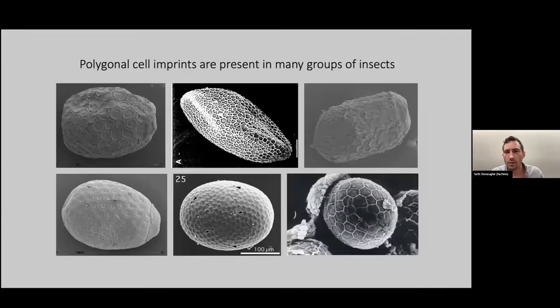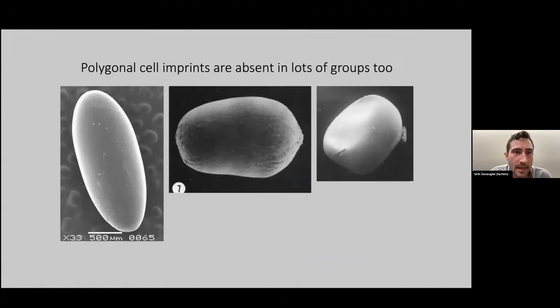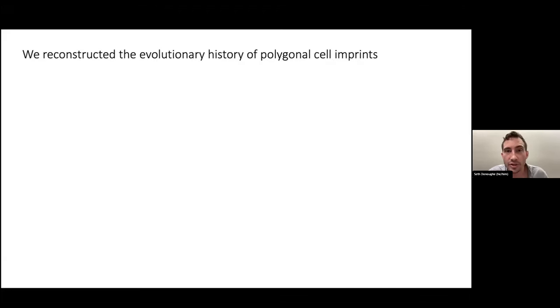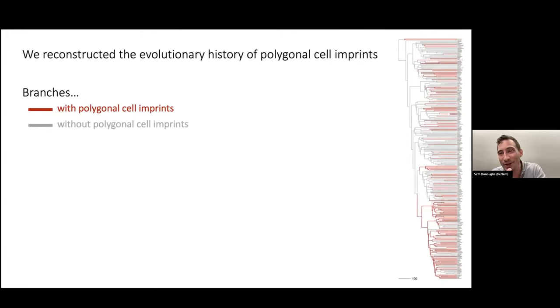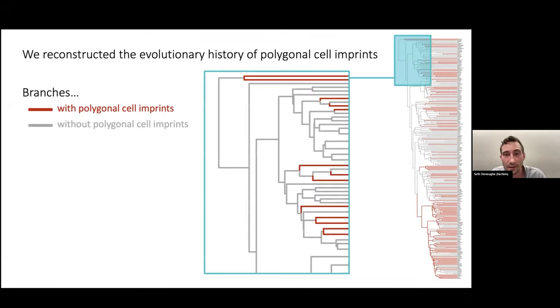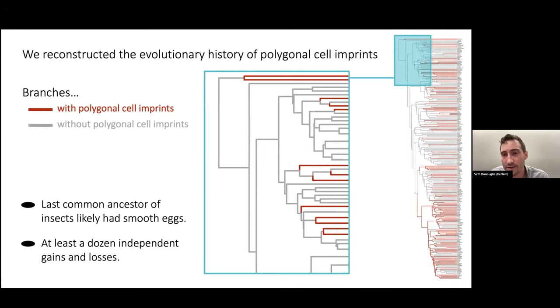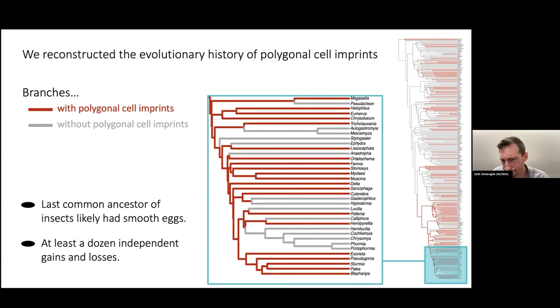With this dataset, what can we learn? One thing we can learn is that these polygonal cell imprints are present in lots of groups of insects and absent in some of them too. The first thing we did is reconstruct the evolutionary history of polygonal cell imprints. What I'm going to show you is a big tree colored according to two traits—whether there are cell imprints or not. The last common ancestor of insects likely had a smooth ECM on its eggshell, but there've been at least a dozen independent gains and losses of these cell imprints. These red branches are independent gains. In this other part of the tree, there's several independent losses of this trait. This is a trait that comes and goes.